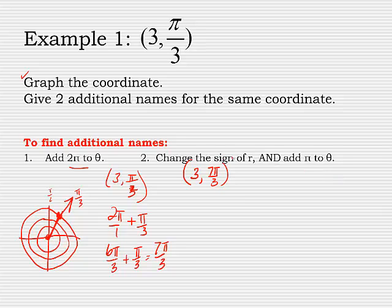And then the second way to do this is to change the sign of r. So when you change the sign of r, it's obviously negative. And when you would graph a negative, instead of going up into that quadrant or down into that given quadrant directly to that angle, you would go the opposite direction.